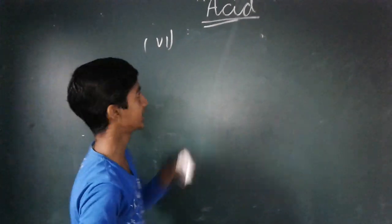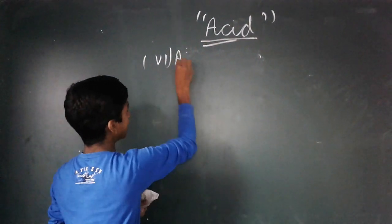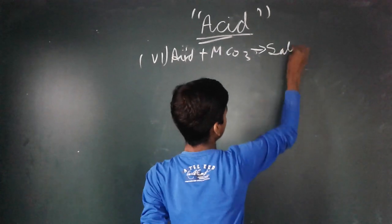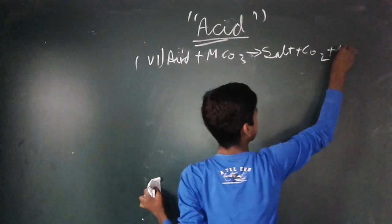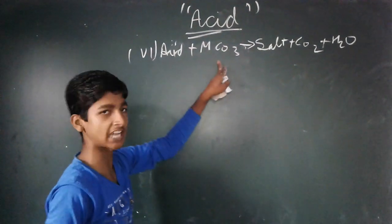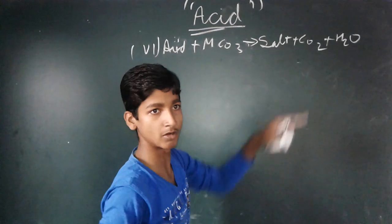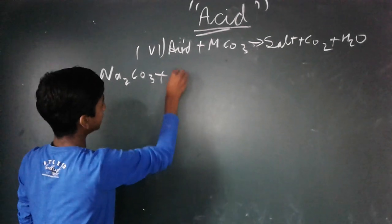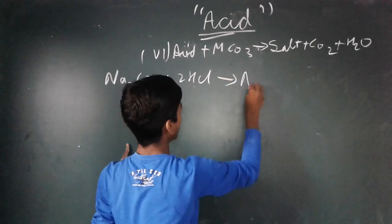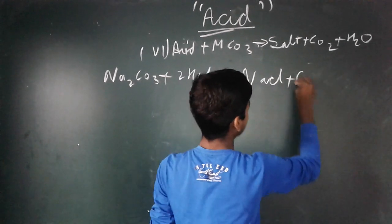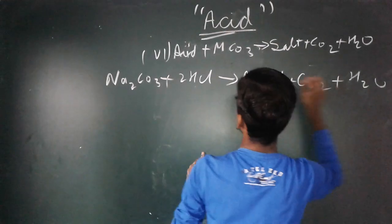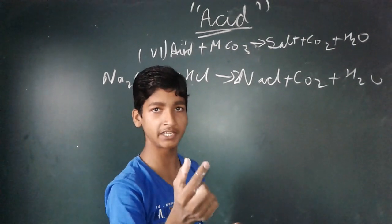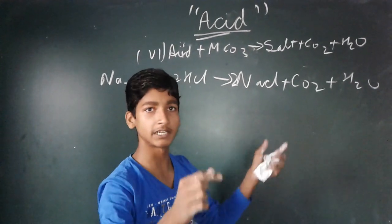The sixth property is that whenever acid reacts with metal carbonate, it gives salt, carbon dioxide, and water. For example, sodium carbonate reacting with hydrochloric acid will form sodium chloride salt and carbon dioxide gas. You can confirm that carbon dioxide gas is formed by bringing a burning candle near the test tube — the flame will be extinguished.